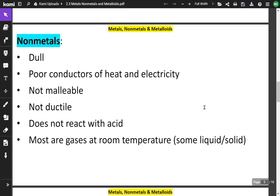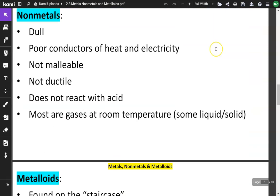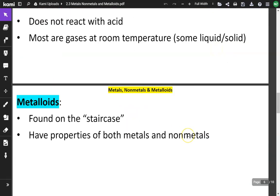And most are gases at room temperatures. Some are liquids. Some are solids. If you think of non-metals, let's just take a quick peek here. Look at the non-metals. Oxygen, gas at room temperature. Nitrogen, another one, gas at room temperature. Metalloids are found on the staircase and have properties of both metals and non-metals.